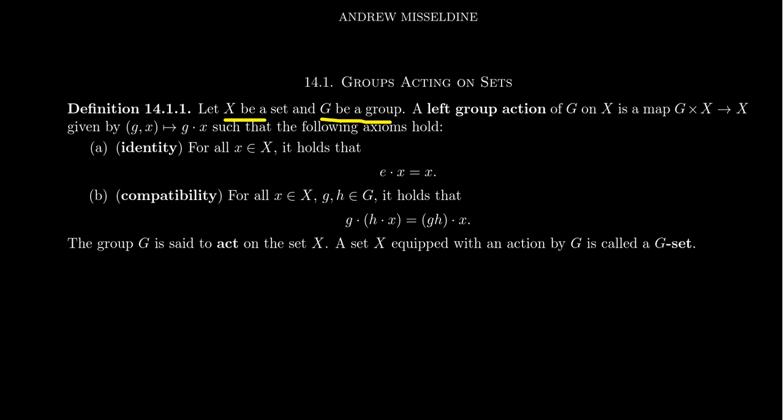For this set X, we don't suppose necessarily any algebraic structure on it. It's just a set. There could be more to X than that, but for the moment, X is just a set and G is just a group. We define a so-called left group action.